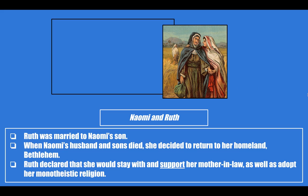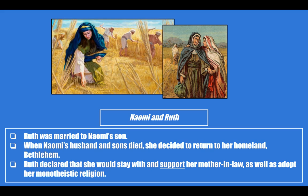Lastly, we have Naomi and Ruth. Ruth was married to Naomi's son — Naomi being a Jewish woman. When Naomi's husband and sons died, she decided to return to her homeland, Bethlehem. The story of Ruth and Naomi tells that Ruth declared she would stay with and support her mother-in-law, as well as adopt her monotheistic religion of Judaism. Ruth is an example of faithfulness to one's family — that's often the lesson of the story of Ruth and Naomi. Here's Ruth working in the fields to support her mother-in-law, and here they are together.